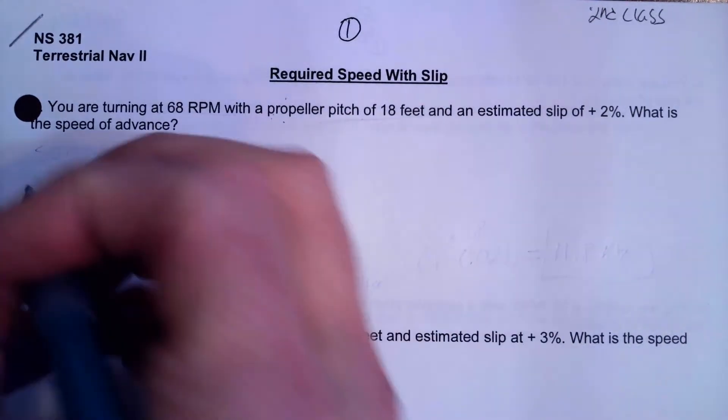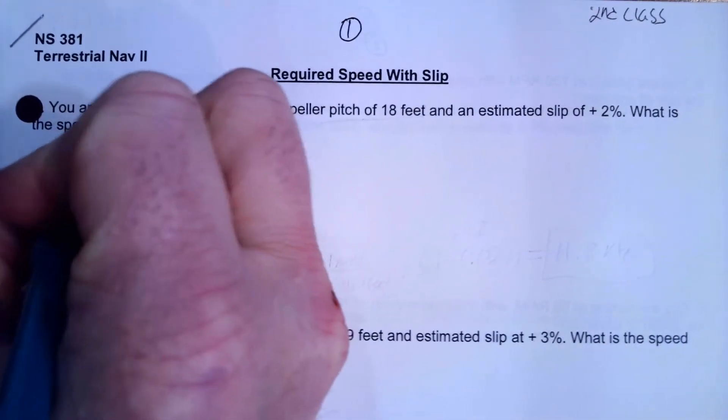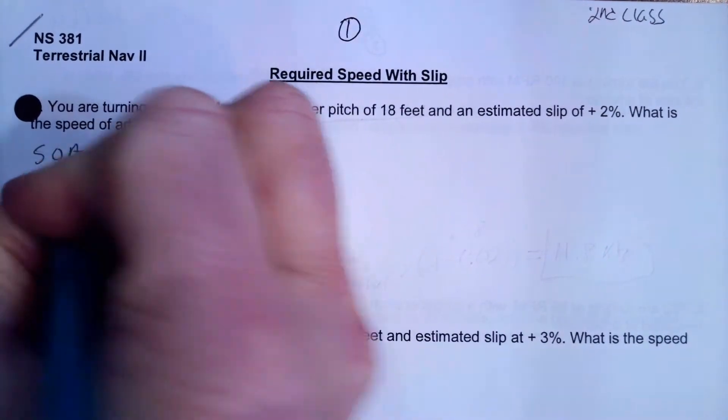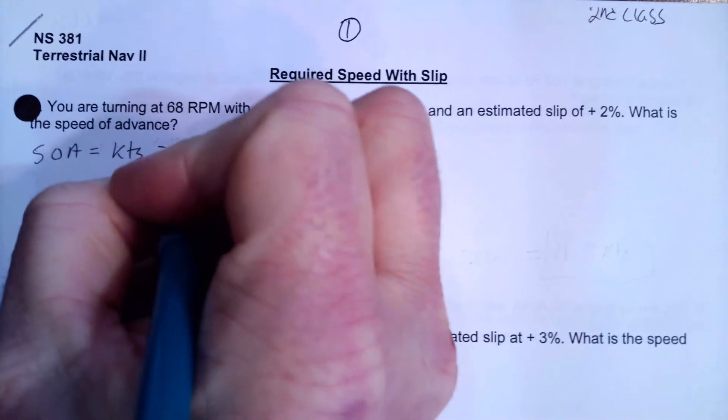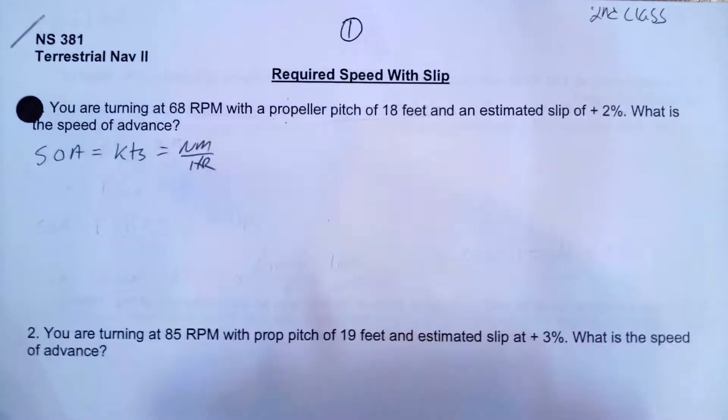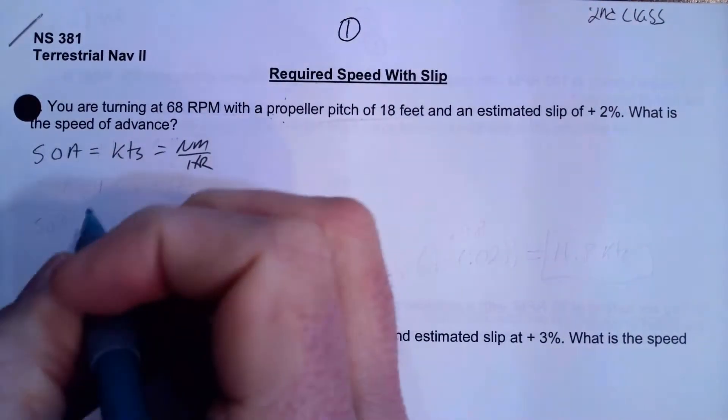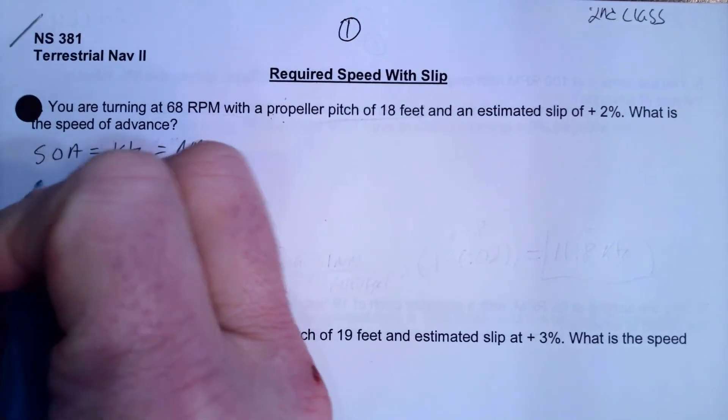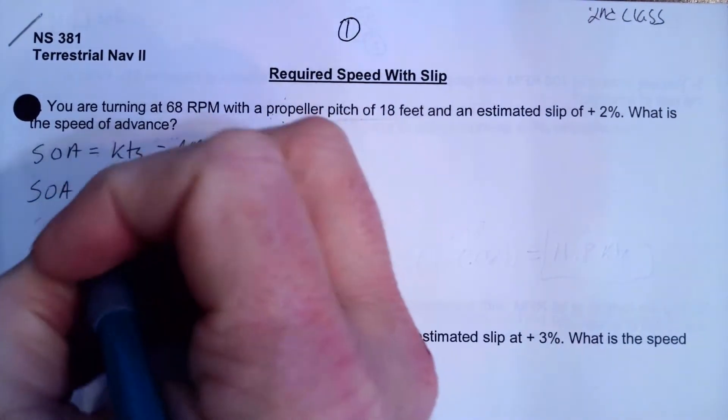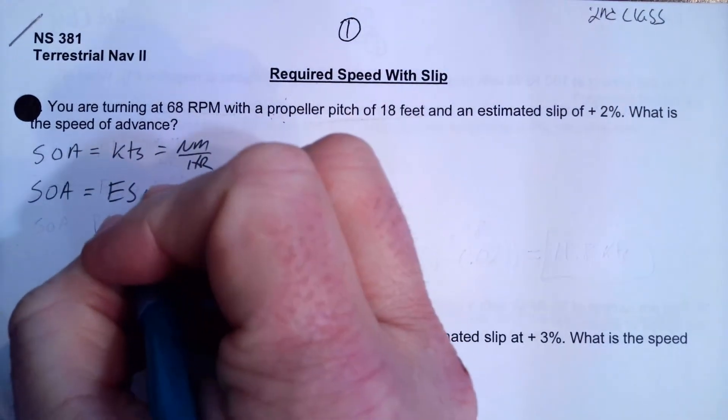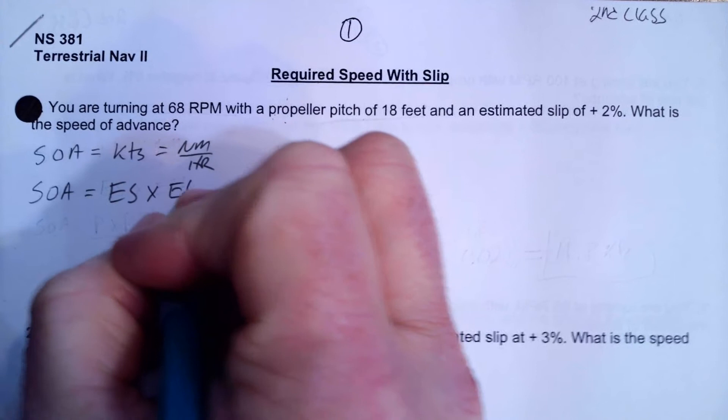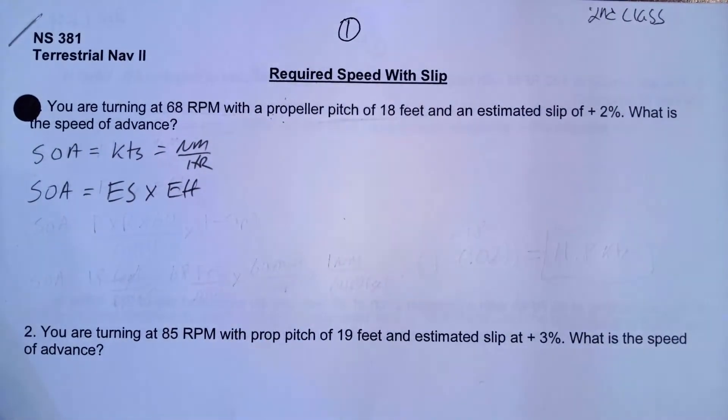So speed of advance, if we really think about it, is really knots, which is nautical miles per hour. And so what formula are we going to put in there? Well, we're going to use our theoretical speed, our engine speed formula, and then we're going to multiply it by our efficiency. And that'll give us our actual performance.